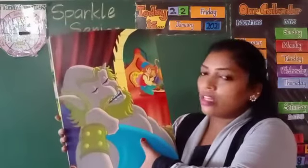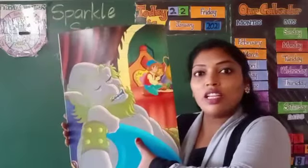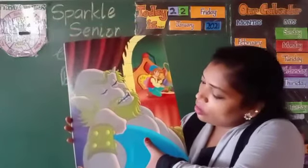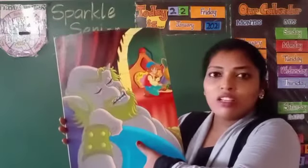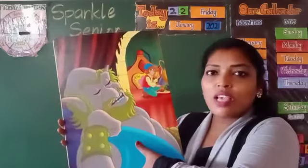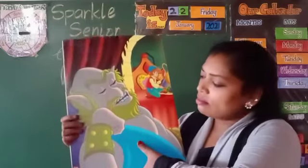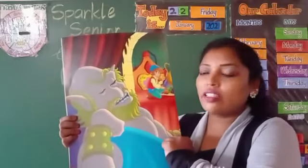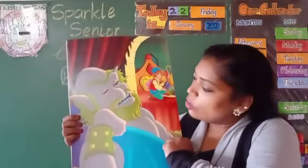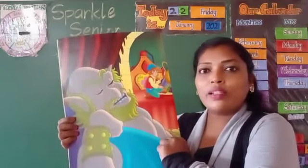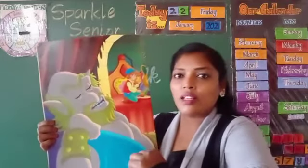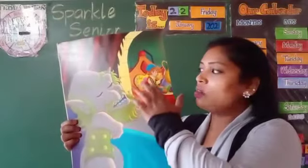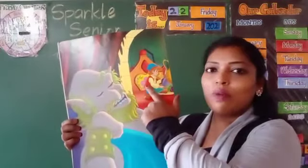It seems that the monster is in deep sleep. Look at the color of the hair — the monster's hair. Monster's hair is all green in color. Look at the teeth. How big teeth he has. This monster is very big. The boy is very small.